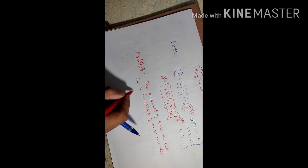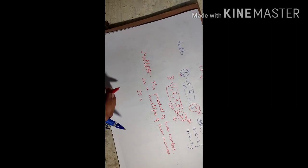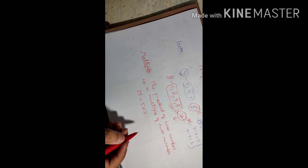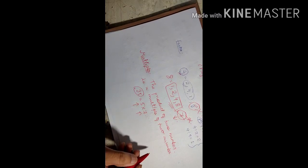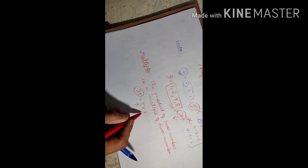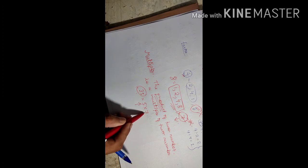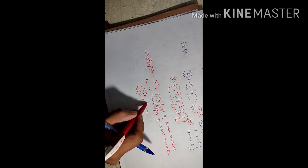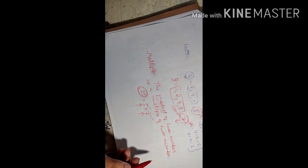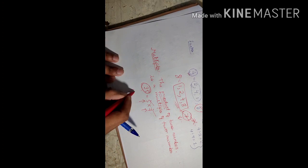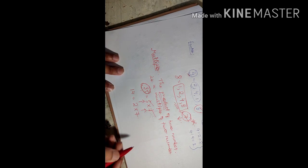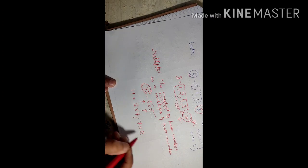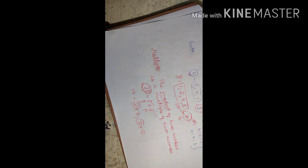For example, if I say 35: 5 into 7 gives you 35, so 5 and 7 are the multiples of 35 because their product gives 35. What about 14? 2 into 7 gives you 14, so 2 and 7 are the multiples of 14.